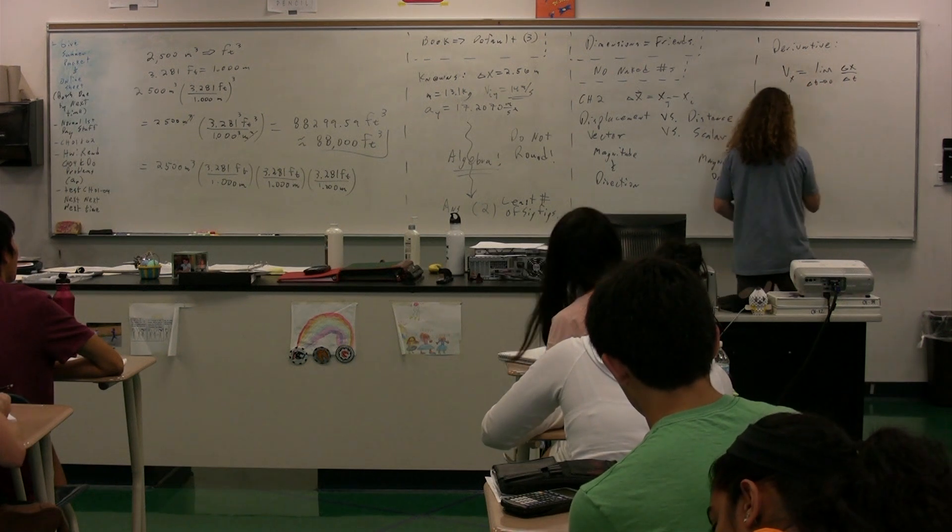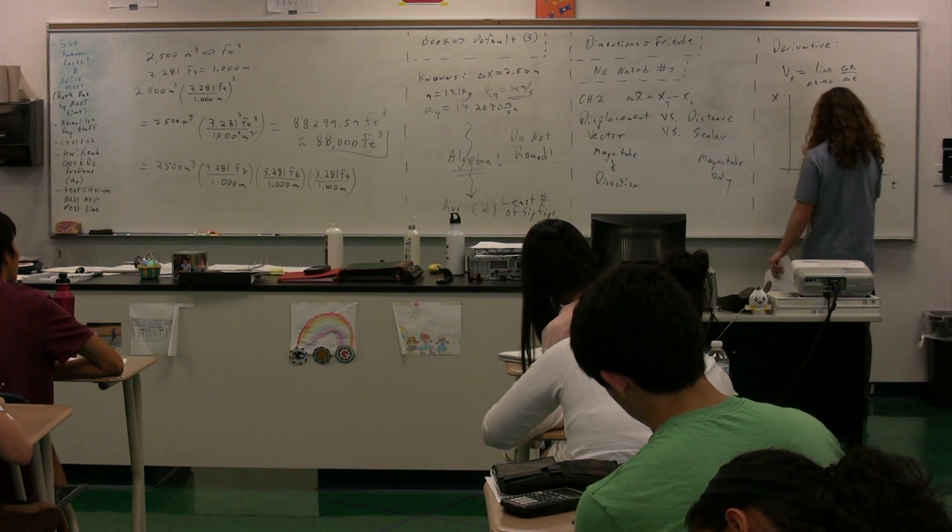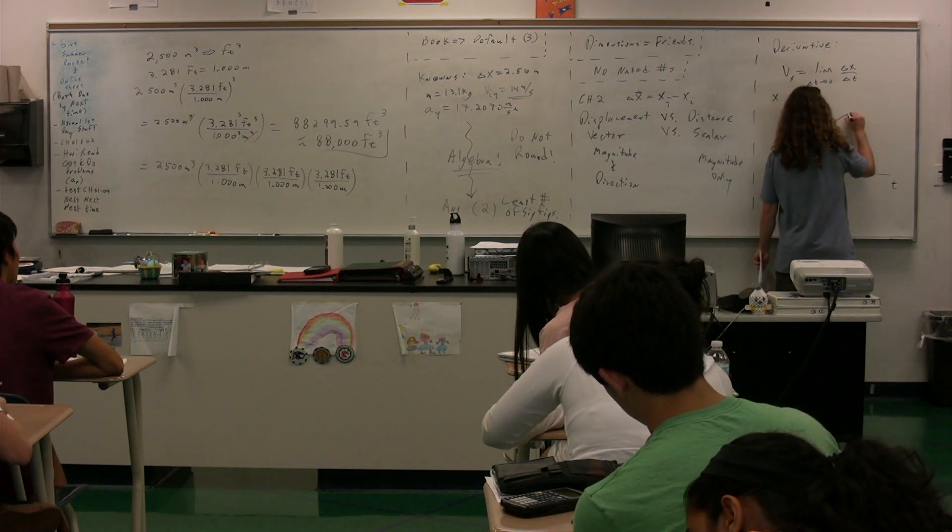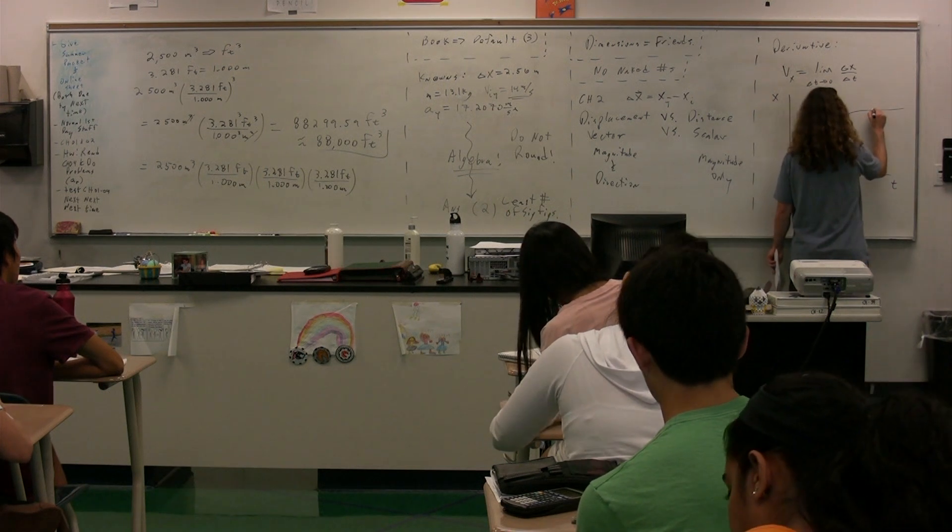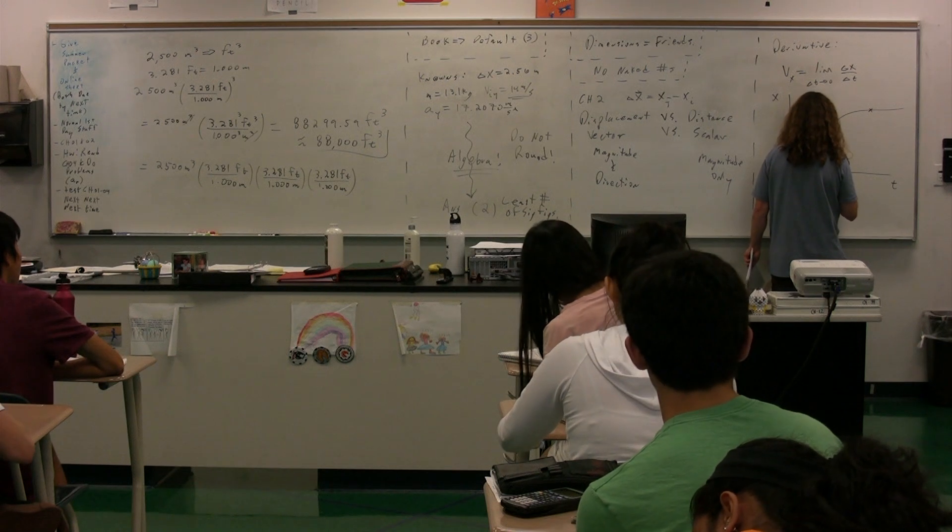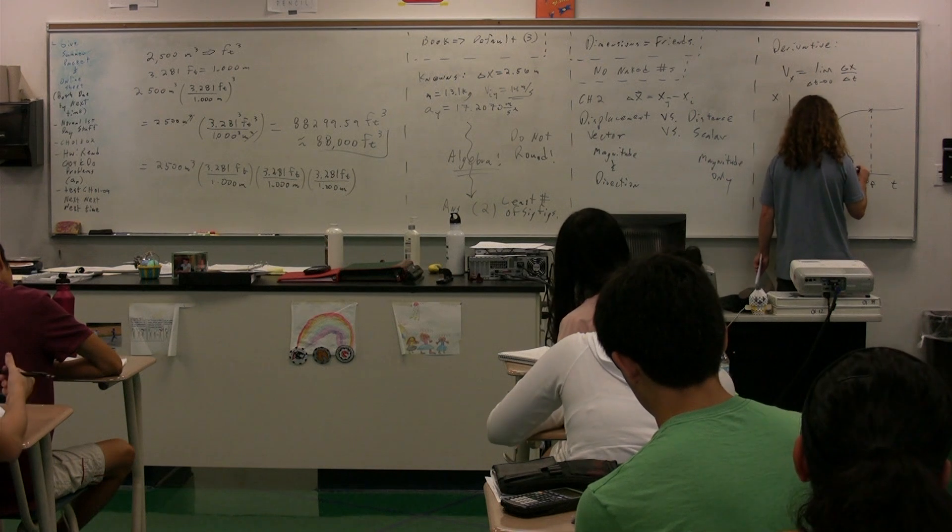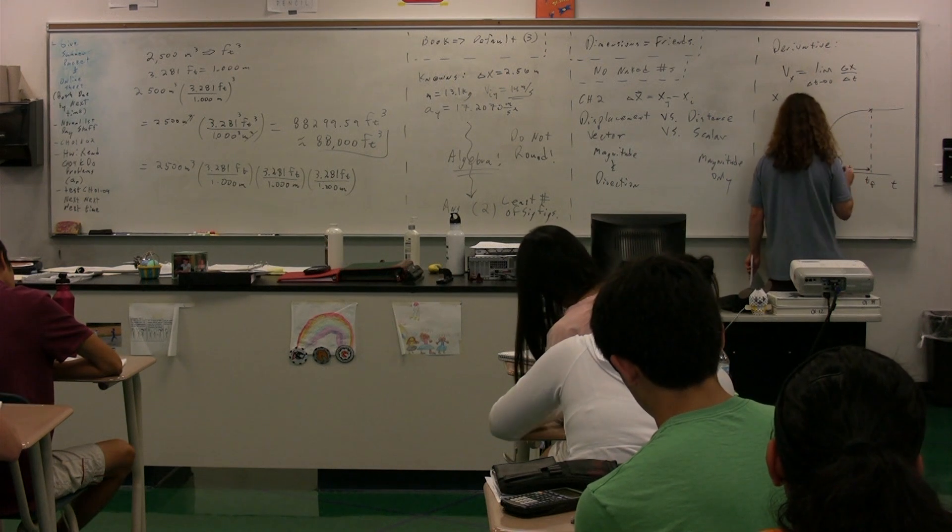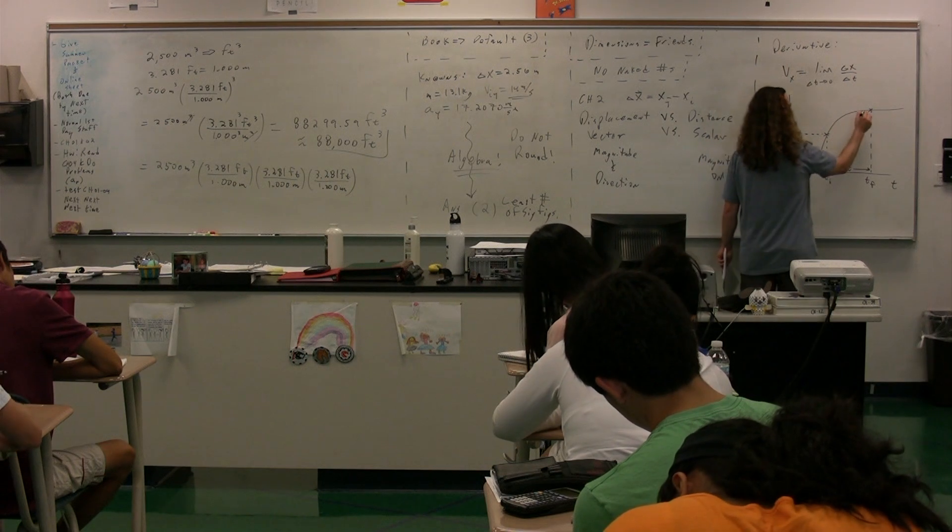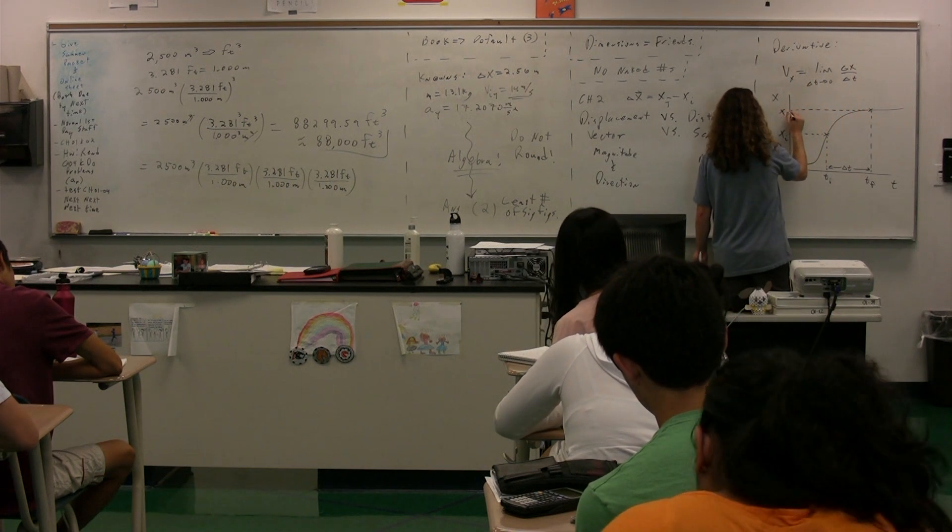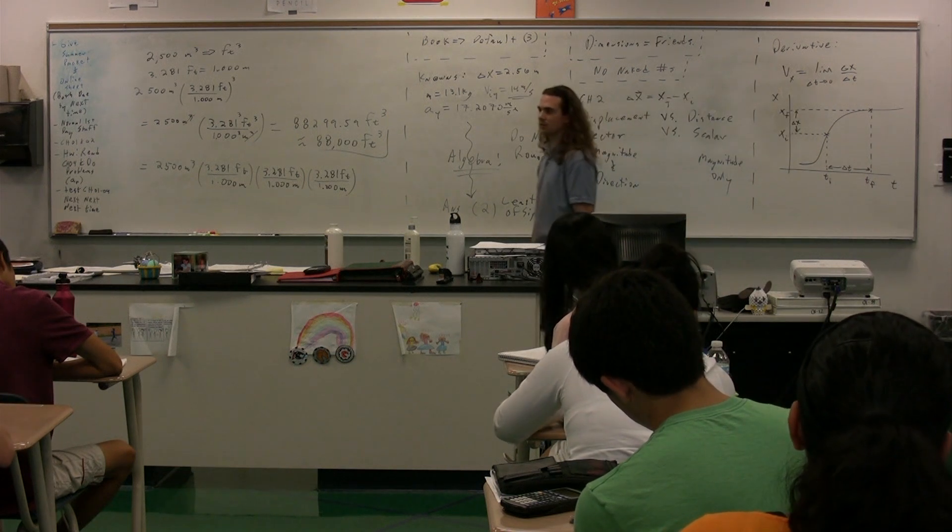We have position as a function of time. We have some sort of graph of that position versus time that may look like this. Who knows what it looks like? We take two points. We'll take one here and one here. This will be time initial. This will be time final. That makes this time the change in time. This would be x initial. This would be x final. Now, this distance here, then, would be the change in position, the displacement, delta x.